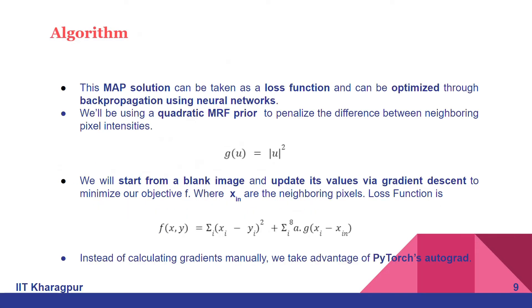For the algorithm, the MAP solution can be taken as a loss function so that it can be optimized through backpropagation using neural networks. We'll be using the MRF prior to be a quadratic equation to penalize the difference between neighboring pixel intensities.